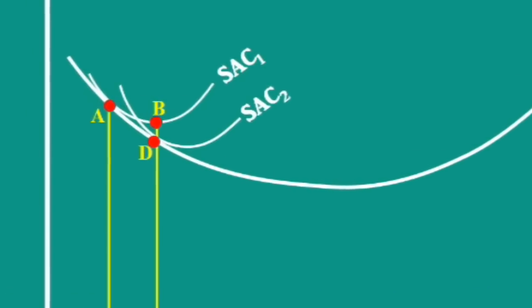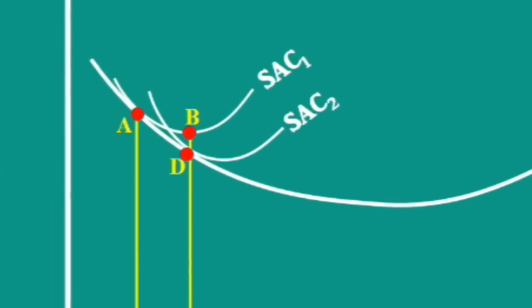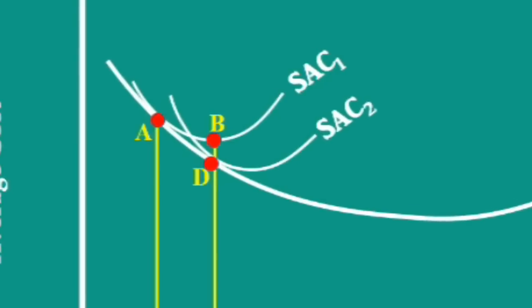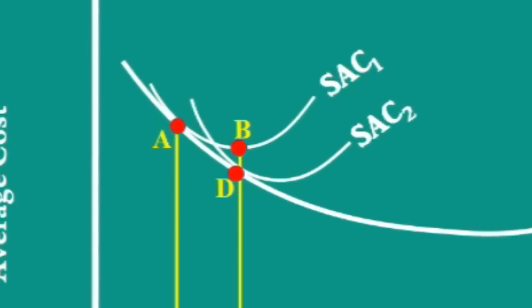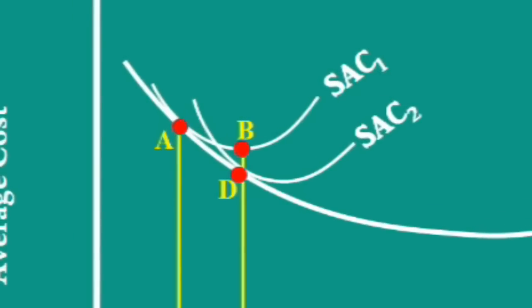Hence, it is highly beneficial for the firm to move along the long run average cost curve rather than moving down along the plant curve SAC1.